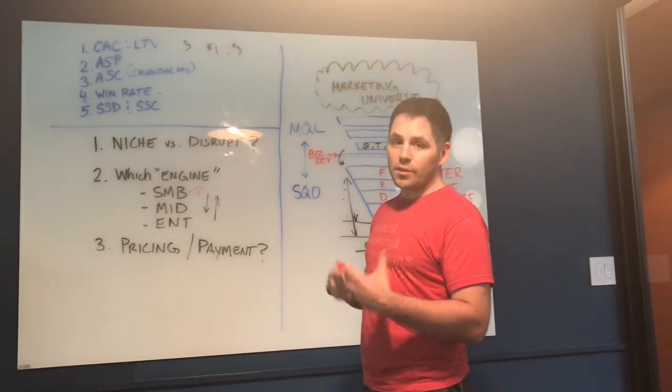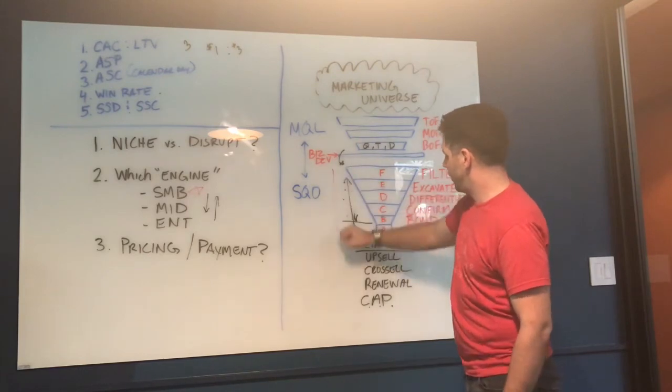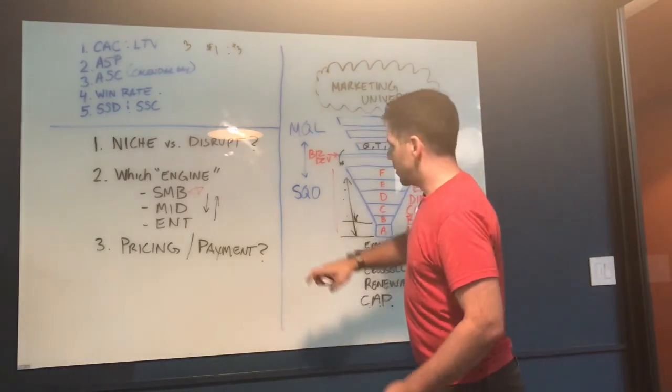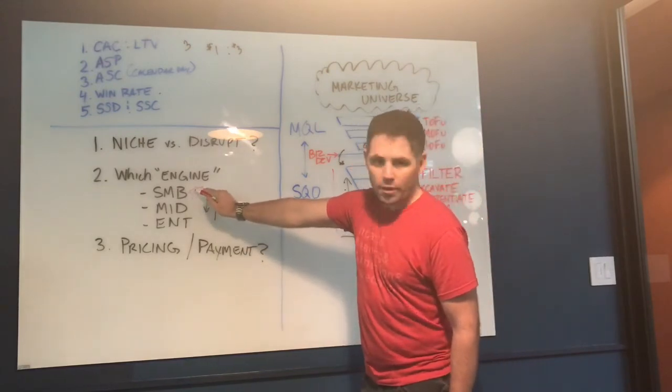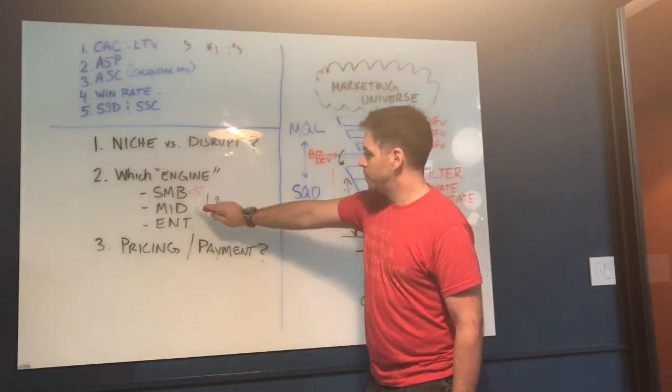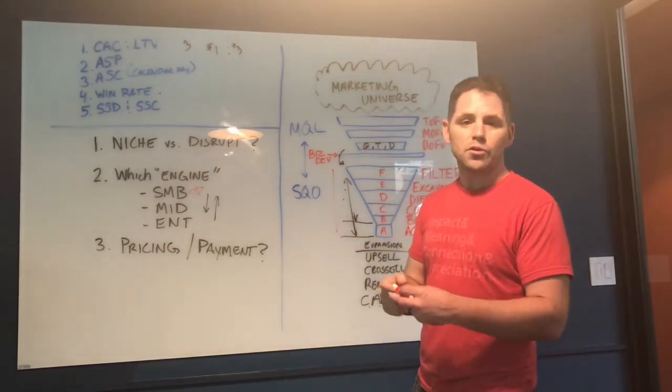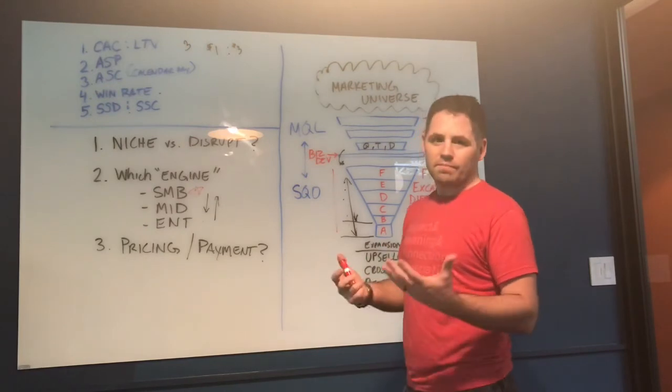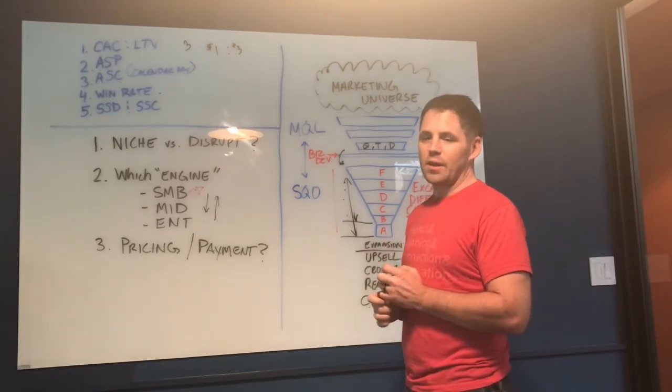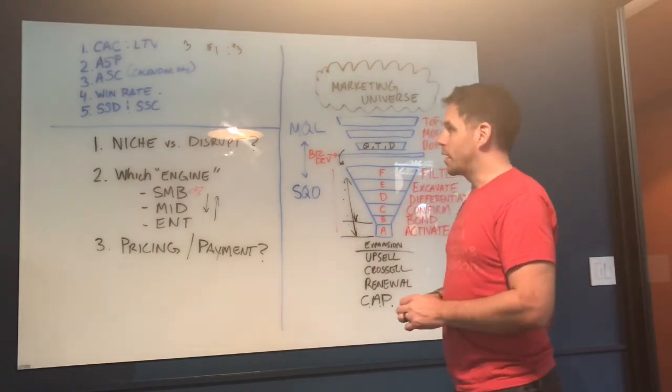Average sale price is definitely something you need to have a handle on. Average sale cycle calendar day, that's the full gamut from F to A. Again, depending upon which market you're in, you're going to see 30 to 45 days is a good target in SMB, 60 to 90 in mid-market, Enterprise 90, 120 to forever. And then win rate, of course,